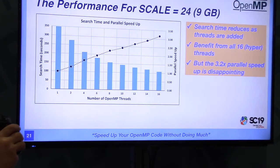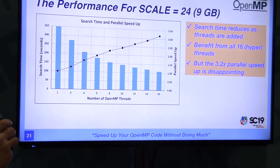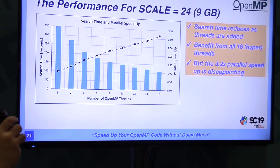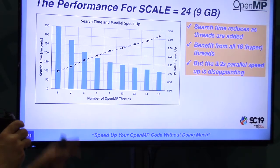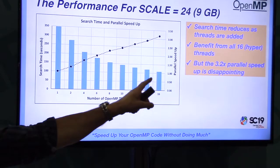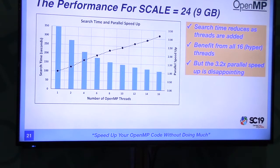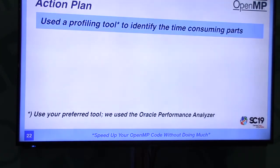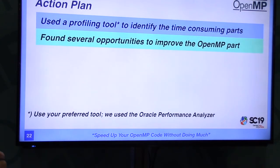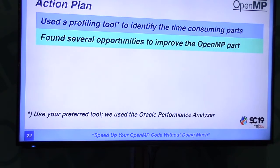Here's the initial performance showing search time versus number of OpenMP threads. I go up to 16 threads — 8 cores with 2 threads per core. The good news is there is benefit from adding threads and we do see a reduction in time, and it can go all the way to 16 hyperthreads. The bad news is we only get 3.2x speedup, which is very low for 16 threads. Using the profiling tool, I found several opportunities to fix the code.